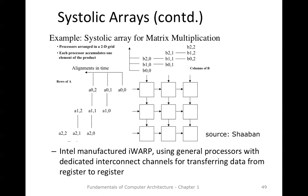Intel manufactured iWARP using general processors rather than specific DPUs, with processors connected by dedicated interconnect channels for register-to-register data transfer. However, the usefulness of MISD is relatively limited — it works well for certain kernels such as matrix multiplication, but once we have sparse matrices or irregular code it becomes difficult to map computation to the MISD model.